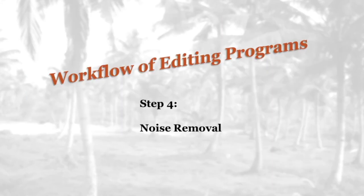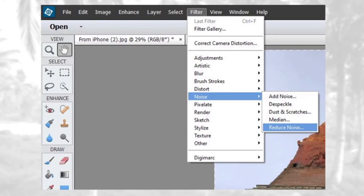Noise removal: what is noise? Noise is what we used to call grain in a photograph. Nowadays it appears as red, green, blue, or orange speckles in neutral areas like sky or gray tones like sidewalks. To open Noise Removal, go to Filter > Noise. You have four choices: Add Noise, Despeckle, Dust and Scratches, or Reduce Noise. Play with each one to see how the image changes.